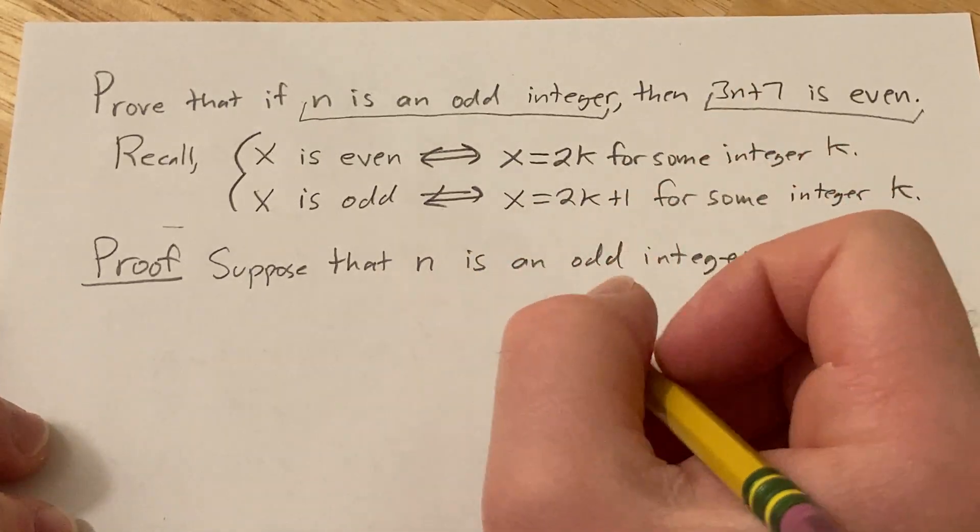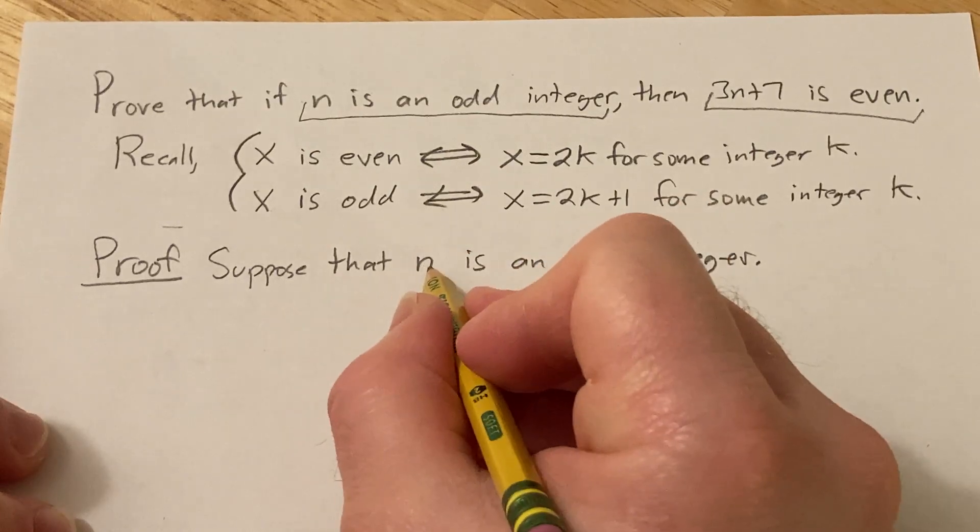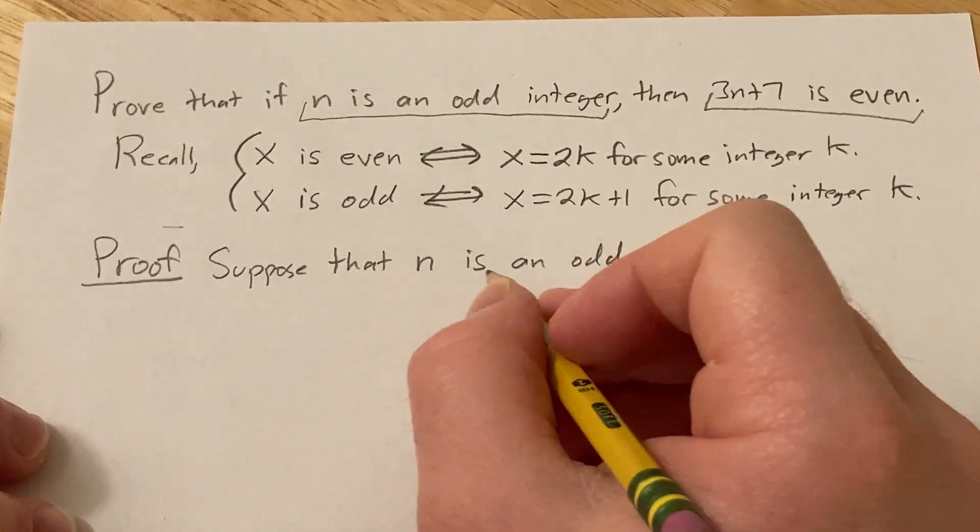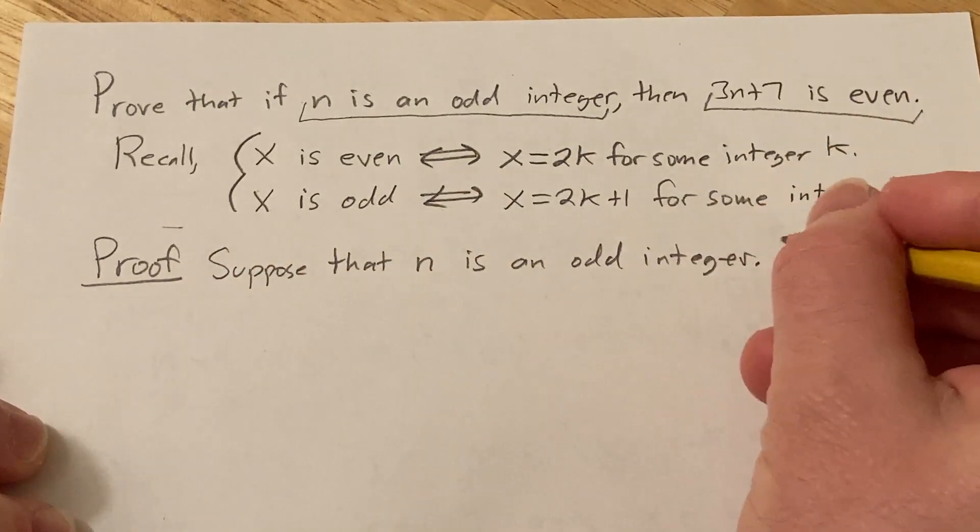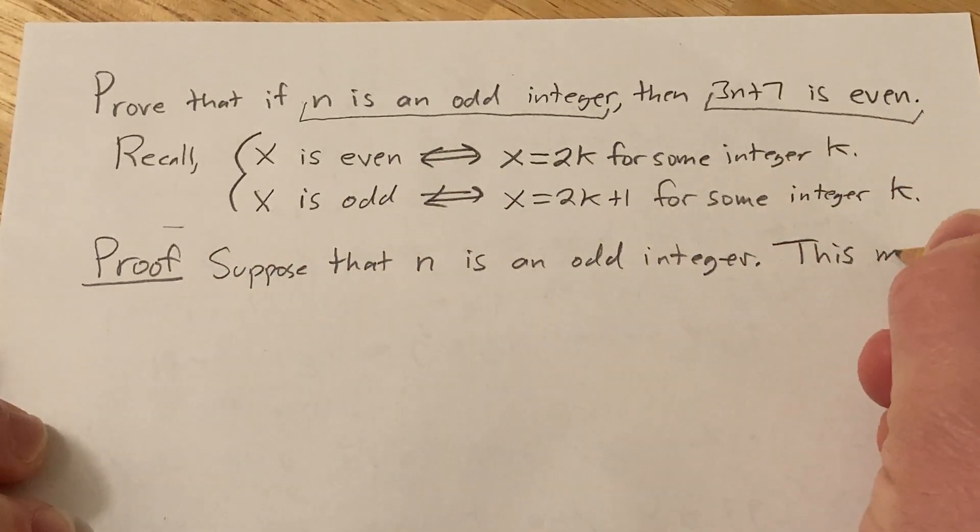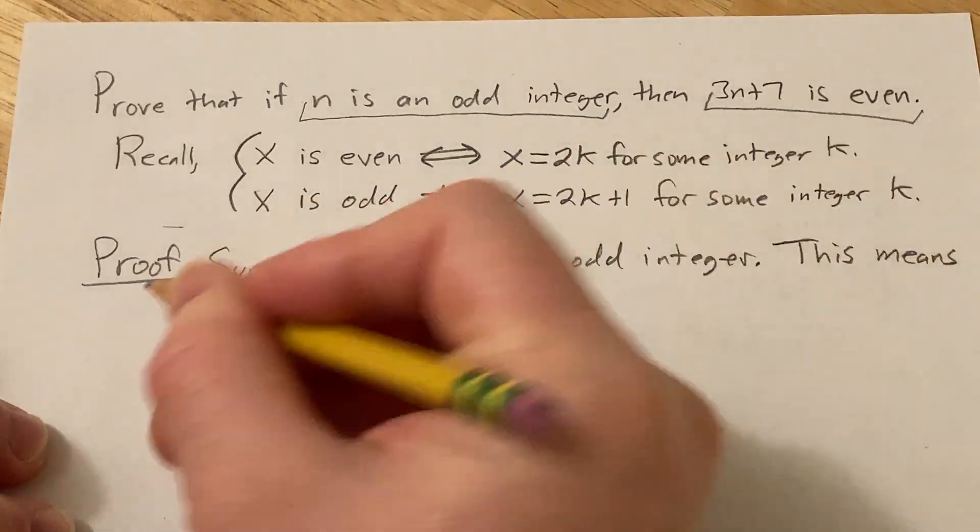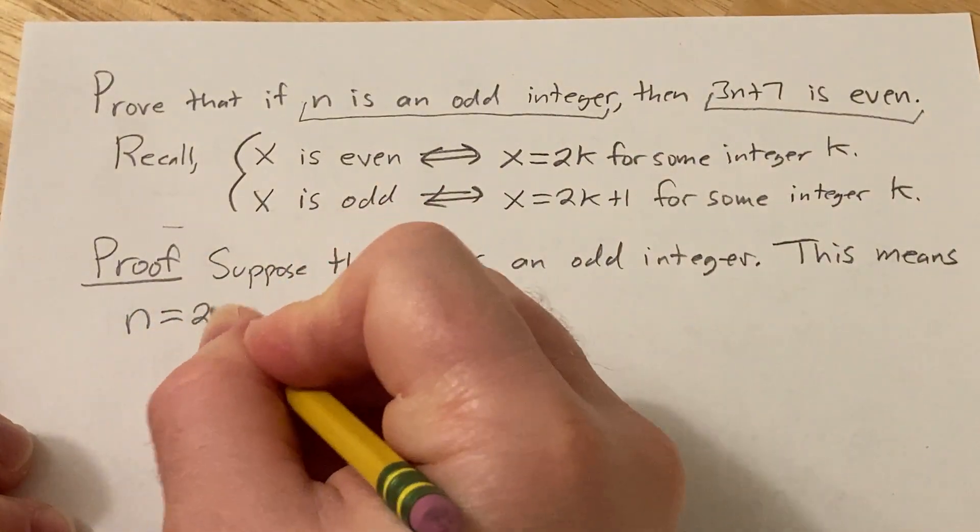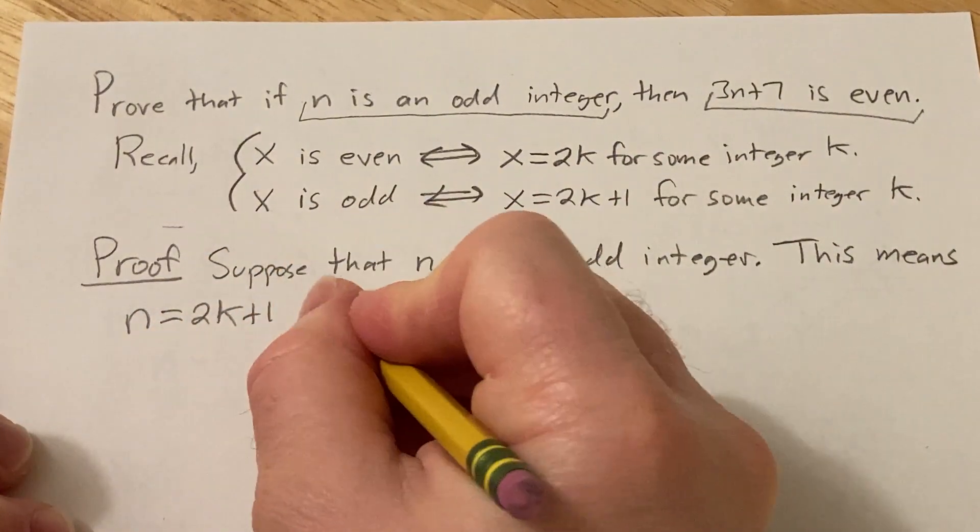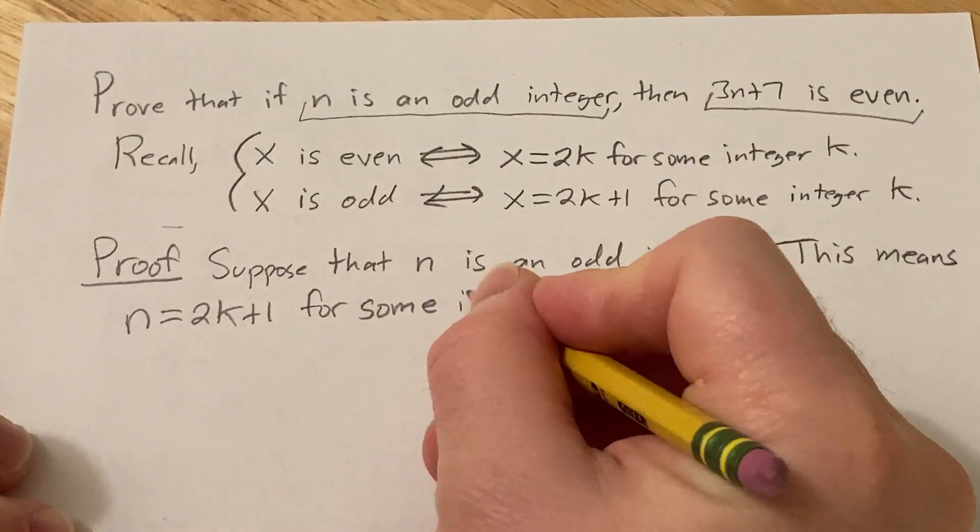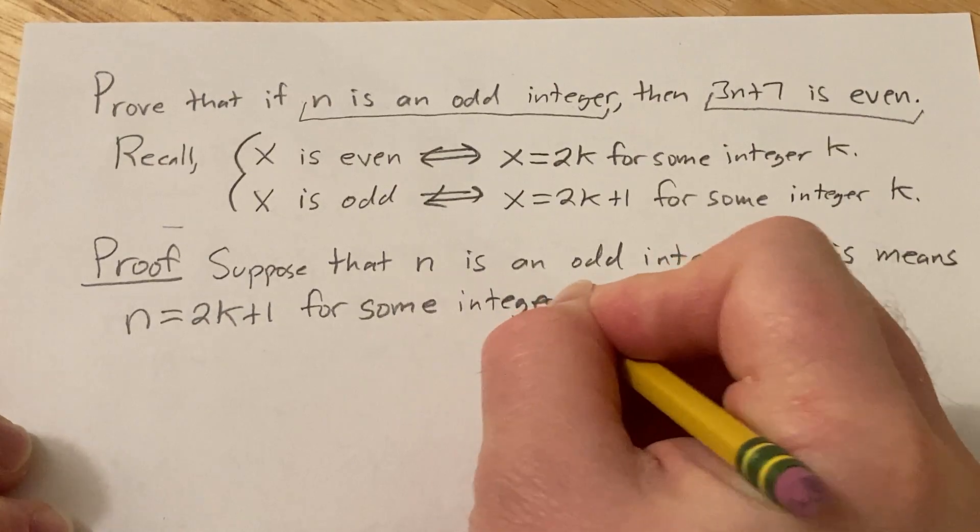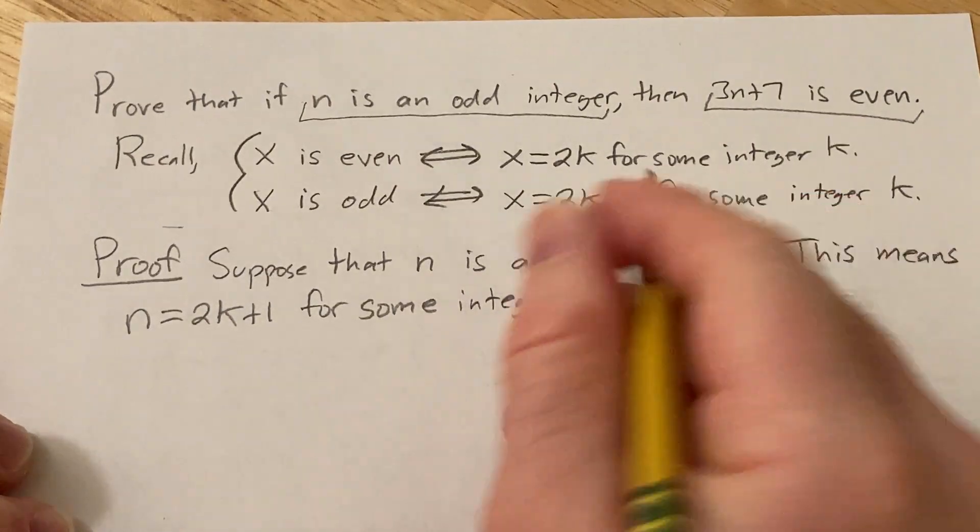The next thing you usually do in a proof like this is you write down what your hypothesis means. So what does it mean to be odd? Well, luckily we went over it here. So let's just actually say what it means. So this means that n is equal to 2k plus 1 for some integer k.